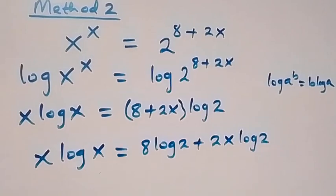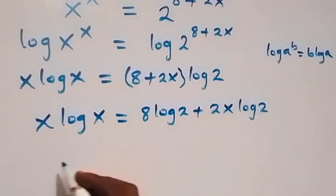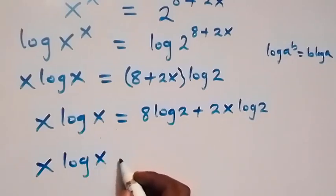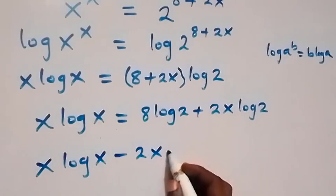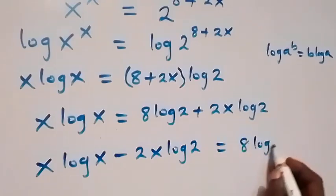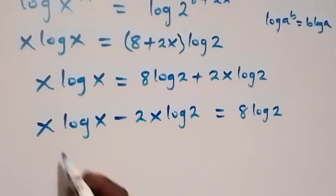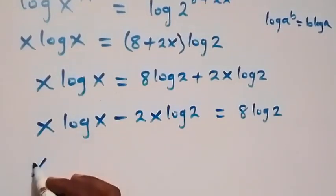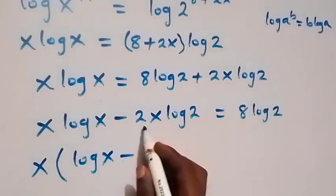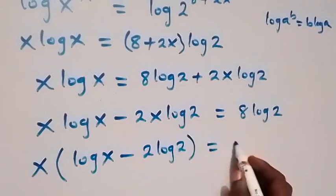Then from here let's bring the terms with x to one side. So let's take 2x log 2 to this side, and this becomes x log x minus 2x log 2 equals to 8 log 2. Then in the next step, x is common here, so let's factor it out. We have x into bracket: what's left is log x minus 2 log 2, then equals to 8 log 2.